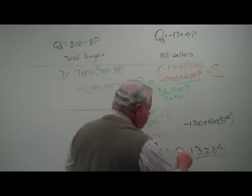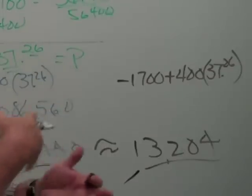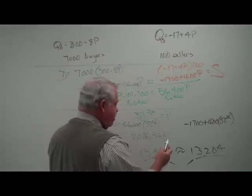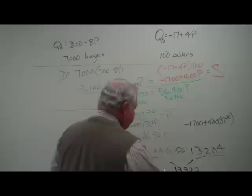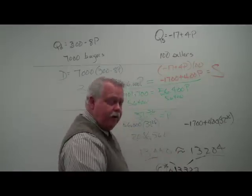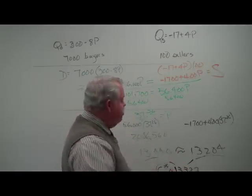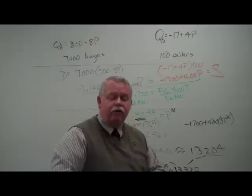Now, those numbers are actually pretty close together given the scale of what we're operating at. On a multiple choice exam, what I would do is take the two and find the average, the midpoint between them, which turns out to be 13,322. So we would say our equilibrium quantity is approximately 13,322. The equilibrium price is approximately $37.26.